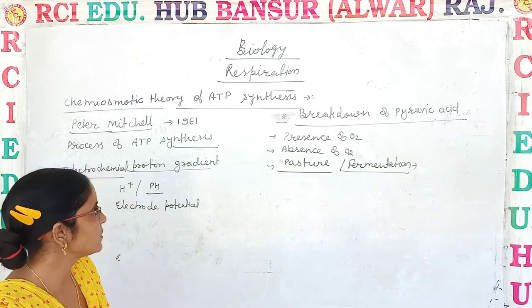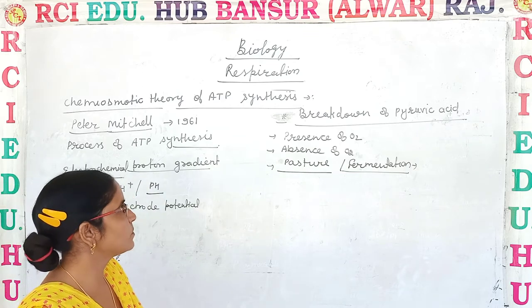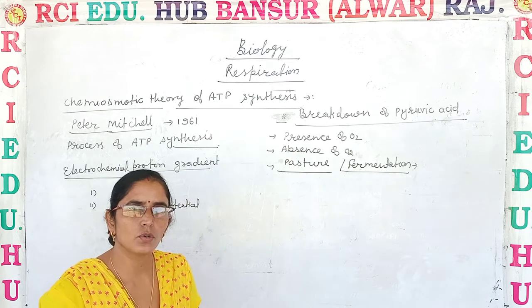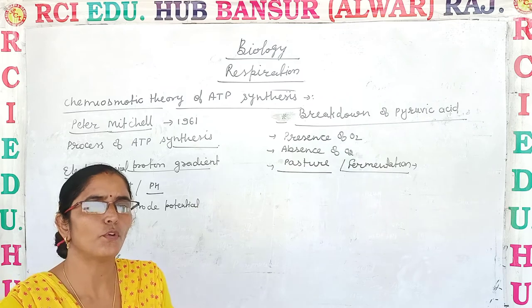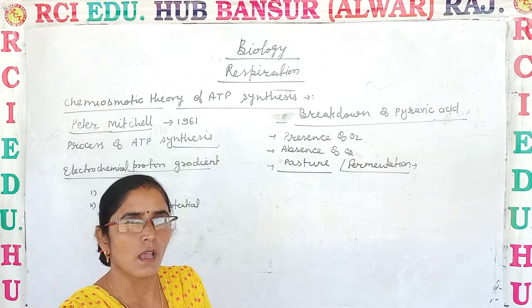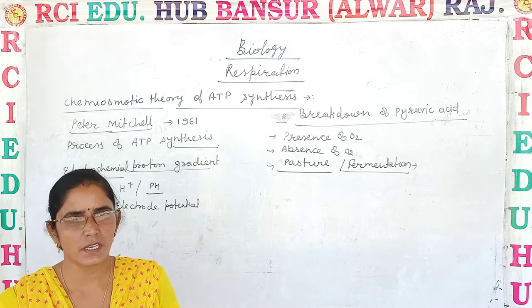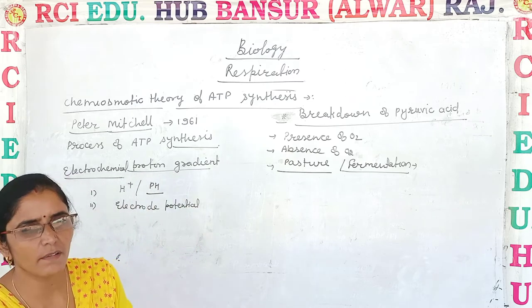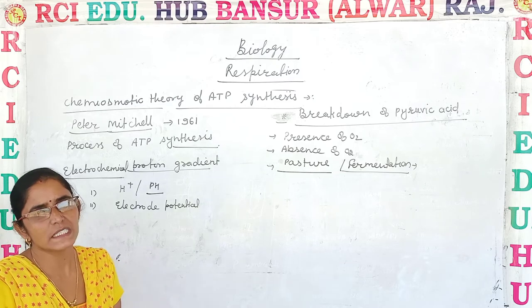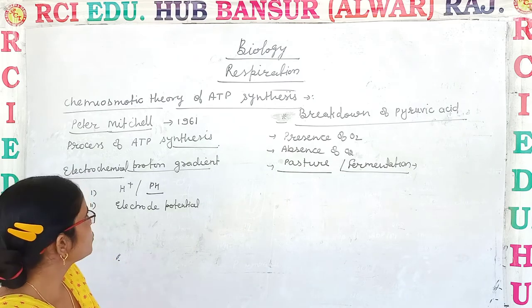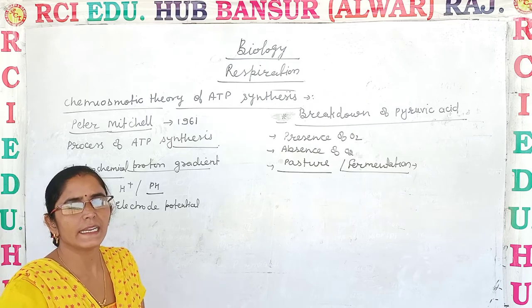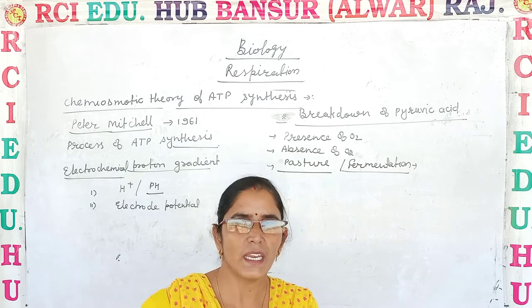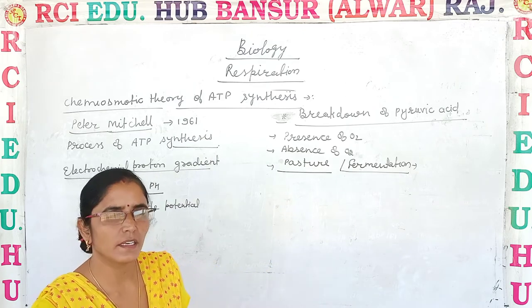So today let's discuss about the chemo-osmotic theory of ATP synthesis. This theory also explains how formation of ATP takes place, how oxidation of NADH+H⁺ and FADH₂ takes place, and how the proton gradient develops and is utilized in the formation of ATP. We know very well that ATP is the energy currency of the cell, and if the cell needs to do any proper functioning, it needs ATP.